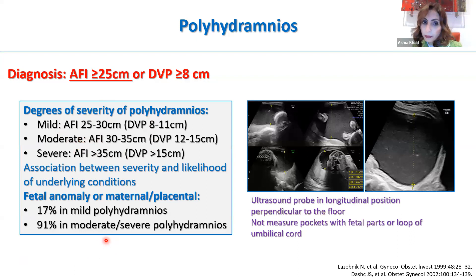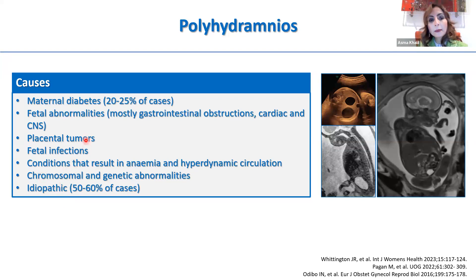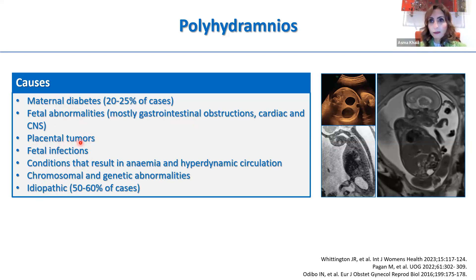In moderate or severe polyhydramnios, you can identify 90% of anomalies or maternal/placental causes, while in mild polyhydramnios only 17%. About 20–25% of cases are due to maternal diabetes, and more than half are idiopathic — but that is a diagnosis by exclusion. So you need to look for fetal abnormalities. In the third trimester, this would mostly be gastrointestinal obstruction, but also cardiac or CNS lesions. Look at the placenta too — you could have a placental tumour like chorioangioma, fetal infections, conditions causing anaemia or hydrodynamic circulation, and chromosomal or genetic abnormalities.